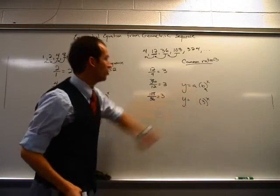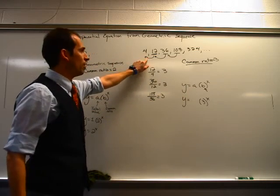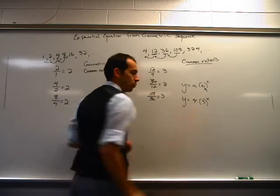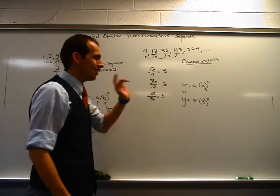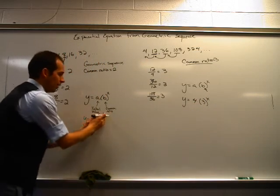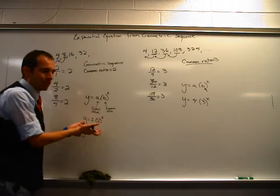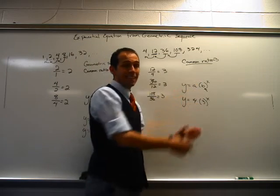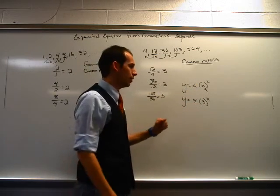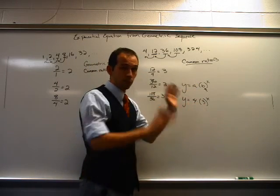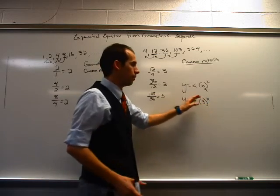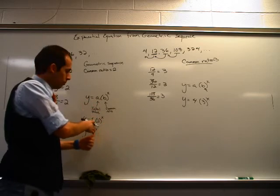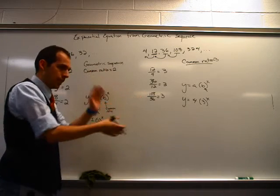But what is that initial value? Well, the initial value in this particular sequence is 4, so it goes right there. Now I leave it like that. Over here, 1 times 2 to the x is just going to be 2 to the x. 4 times 3 to the x, I can't simplify that one. I can't do 4 times 3 because 3 is raised to the x power.